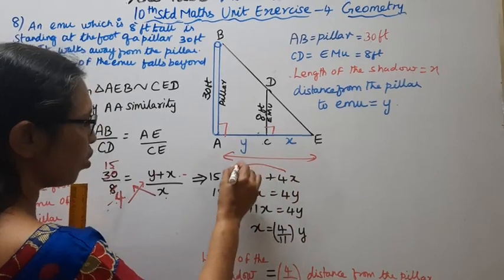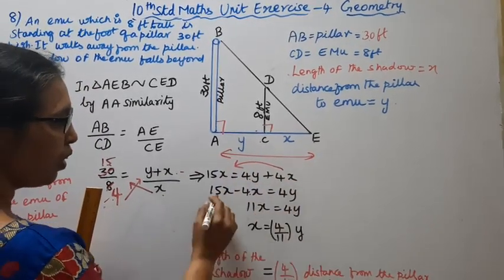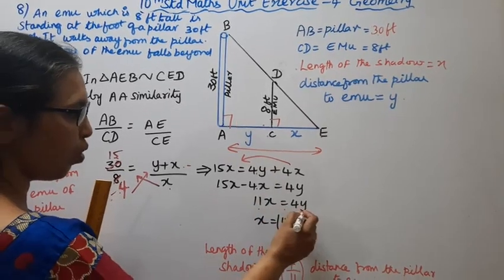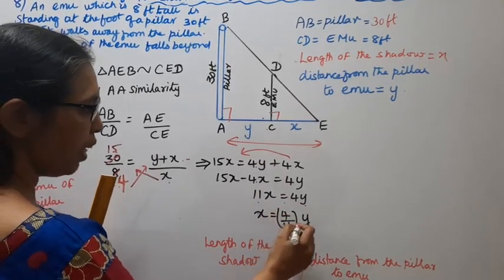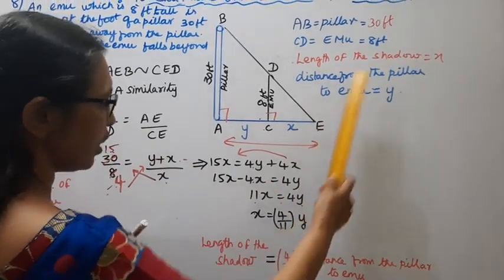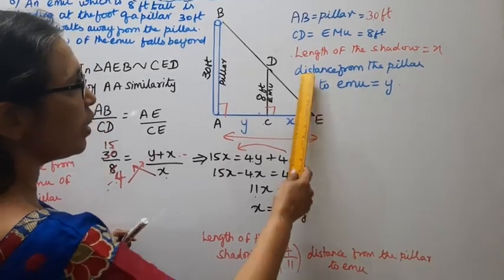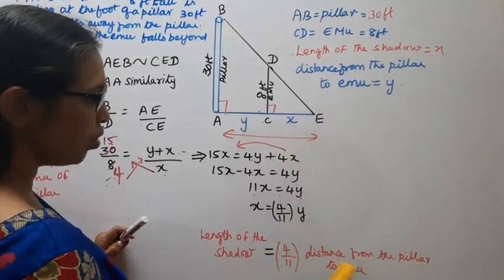Yipon, X inga kondu vandharwe. 15X minus 4X equal to 4Y. That is equal to 11X equal to 4Y. X equal to 4 by 11Y. Ipon, X enna? Length of the shadow. Length of the shadow equal to 4 by 11. Y ennathis? Distance from the pillar to emu.